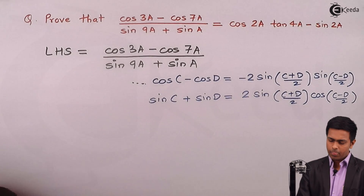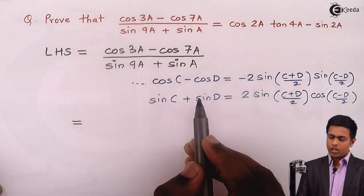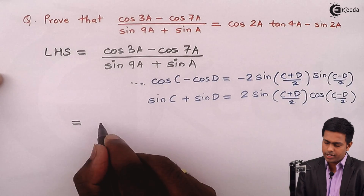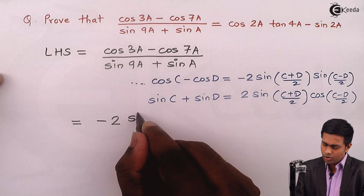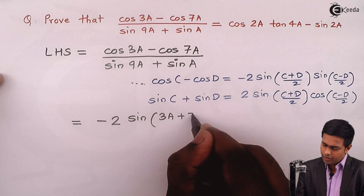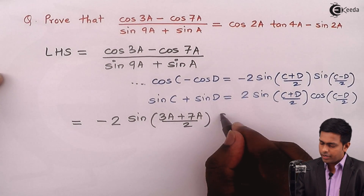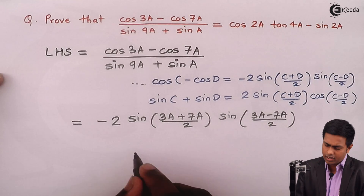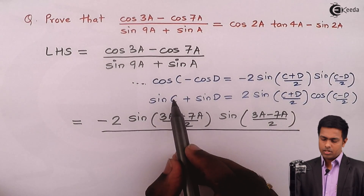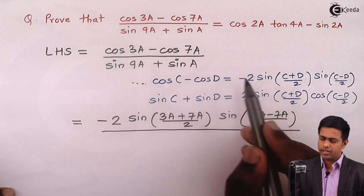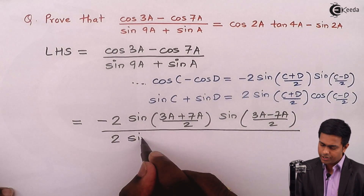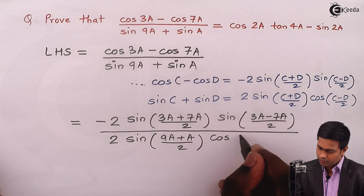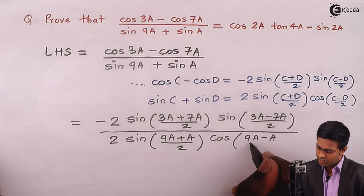So let's apply. In the numerator, c is 3a and d is 7a, so it is equal to minus 2 sin of (3a plus 7a)/2 into sin of (3a minus 7a)/2. Similarly in the denominator, c is 9a and d is a, so we get 2 times sin of (9a plus a)/2 into cos of (9a minus a)/2.